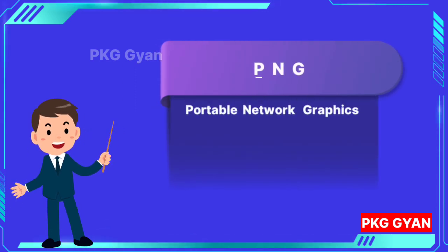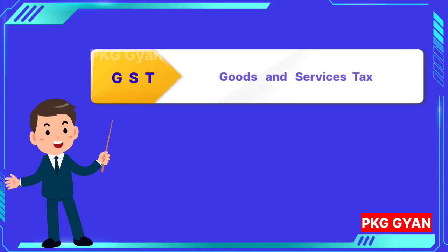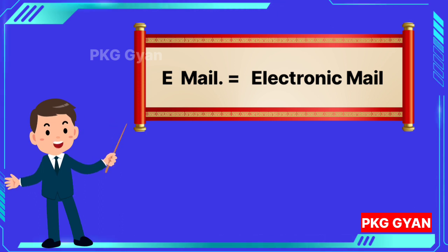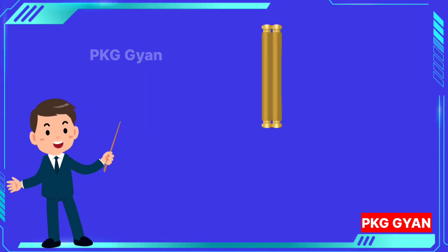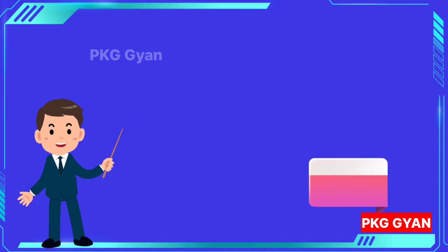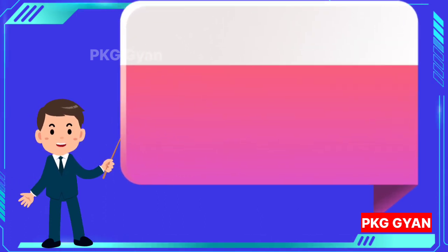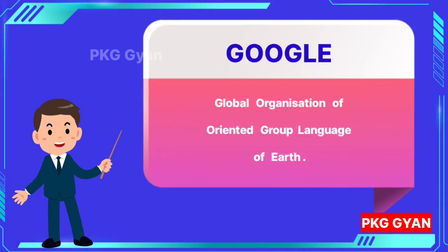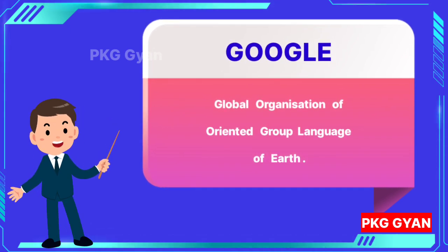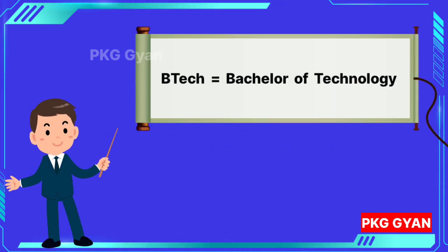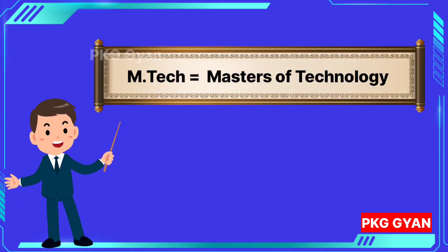GST: Goods and Services Tax. Email: Electronic Mail. Gmail: Google Mail. Google — the full form of Google is Global Organization of Oriented Group Language of Earth. BTech: Bachelor of Technology. MTech: Masters of Technology.